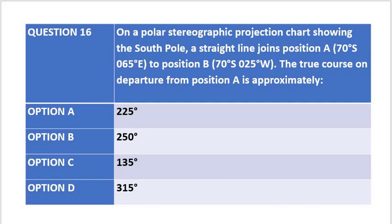The question states: on a polar stereographic projection chart showing the south pole, a straight line joins position A, which is 70 degrees south and 65 degrees east, to position B, which is 70 degrees south and 25 degrees west. The true course on departure from position A is approximately, and the options are as given below.